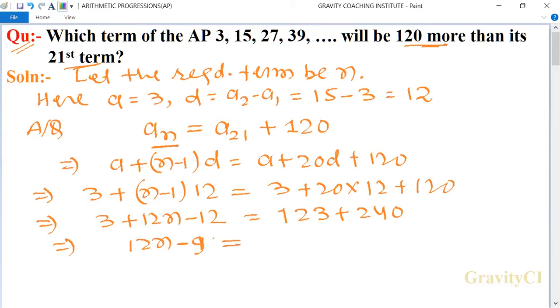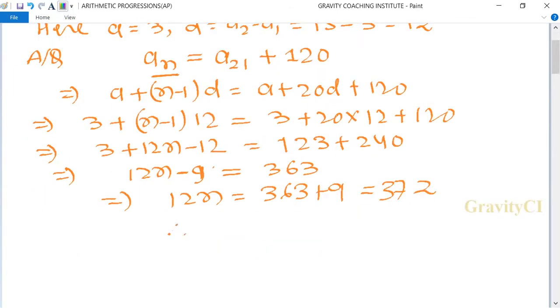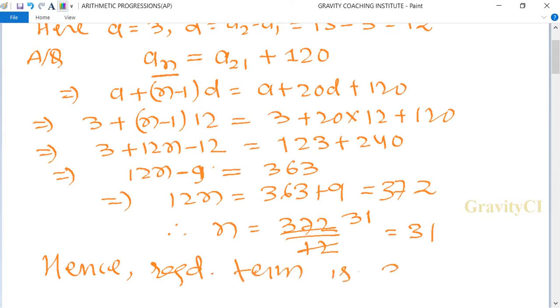Therefore, 12n minus 9 is equal to 363, so 12n is equal to 363 plus 9, which is equal to 372. So 12n is equal to 372. Therefore, n is equal to 372 upon 12, which is equal to 31. Hence, the required term is the 31st term.